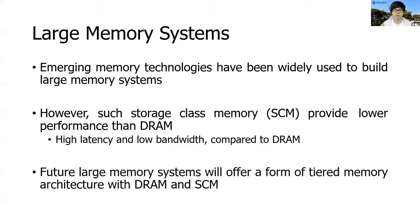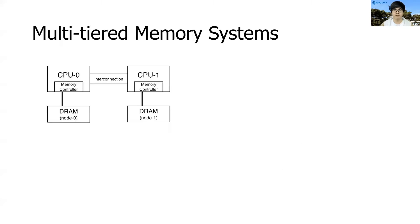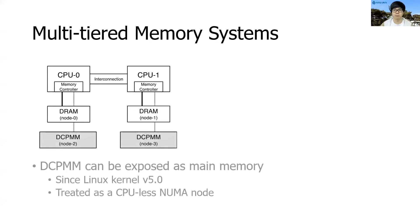Instead, we expect that future large-scale memory systems will be comprised of both DRAM and SCM to form a tiered memory hierarchy. Let me briefly describe how the current Linux kernel has been modified to support Intel's DCPMM as main memory. This figure shows a traditional two-socket system, and each socket has its own DRAM node. On top of that, the DCPMM memory nodes are attached to each CPU socket forming a multi-tiered memory system. In Linux, the different memory types are treated as different NUMA nodes.